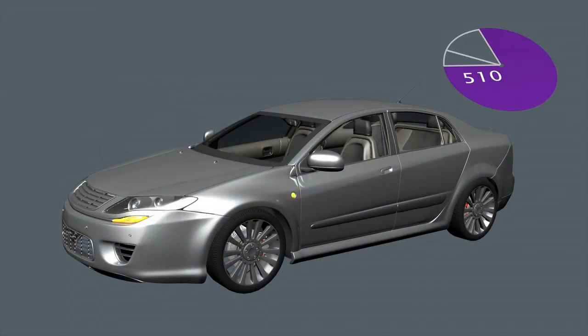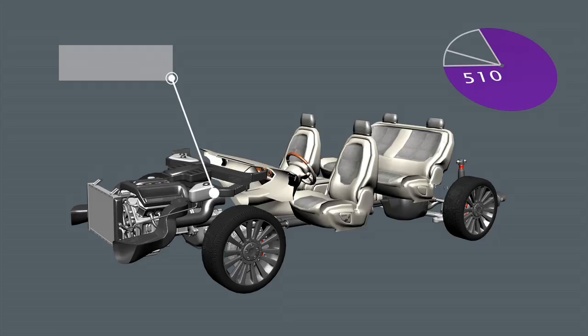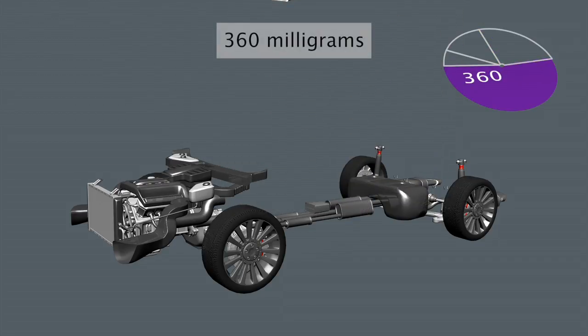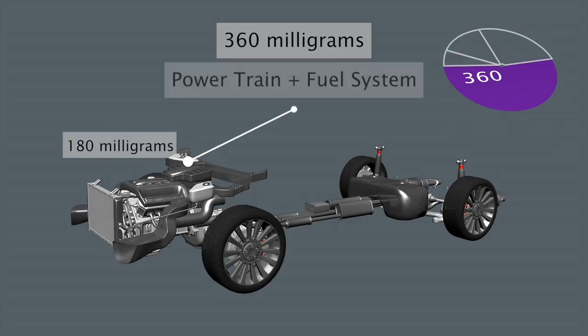Here is one example of how to meet that goal. Non-fuel-based emissions, VOCs emitted by new paint, plastics, adhesives and tyres are allotted 150 milligrams, leaving 360 milligrams to be divided equally between the powertrain and the fuel system.